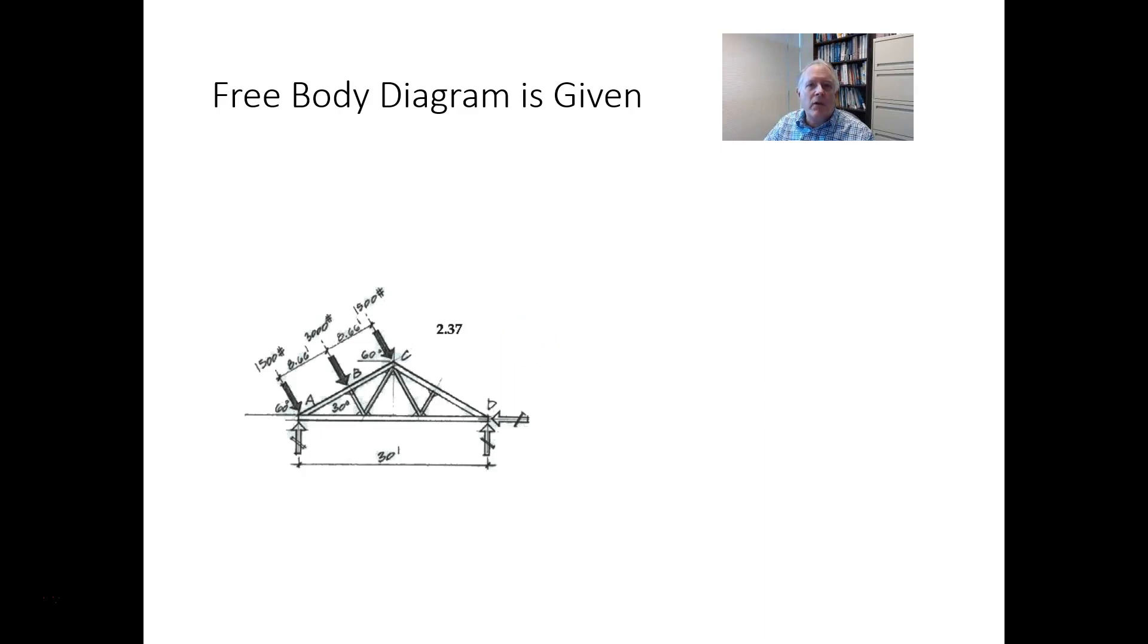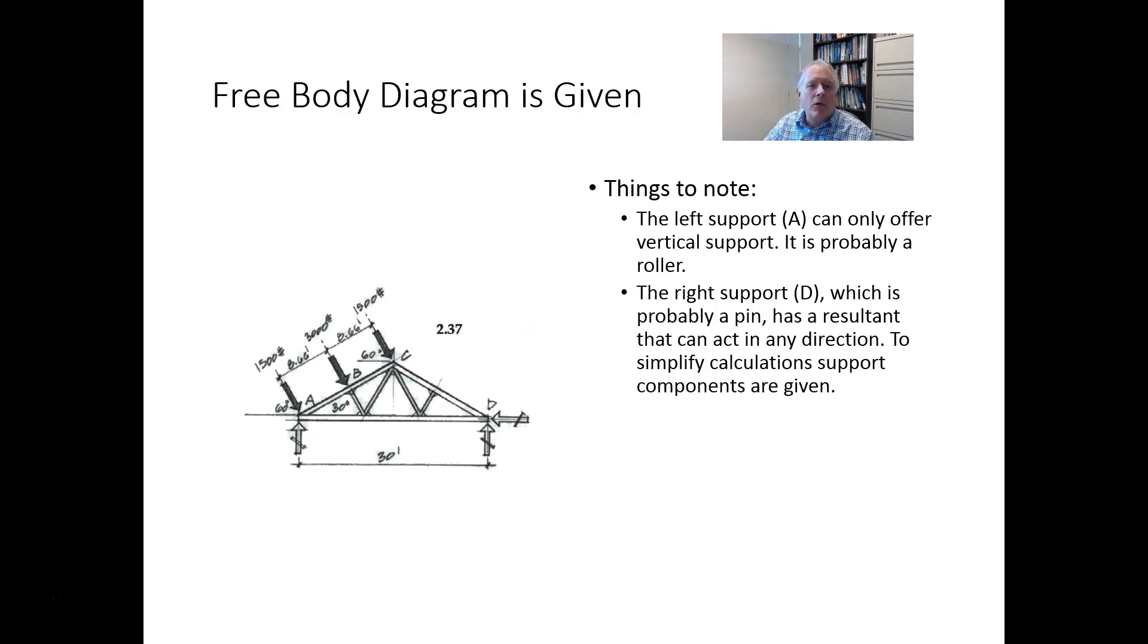This is the starting point for the problem. It's a truss, and on the truss is applied three loads sloping. There are three reaction components. A vertical reaction component at A, and a horizontal and vertical reaction components at D. The left support can only offer vertical support. It's probably a roller.